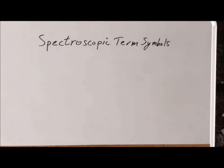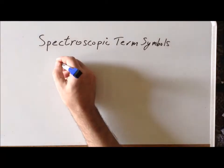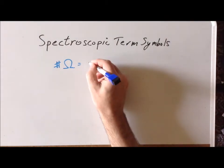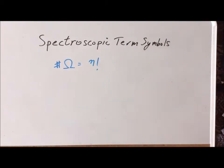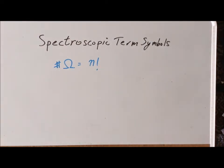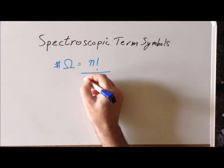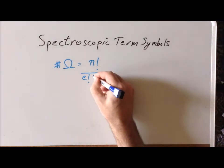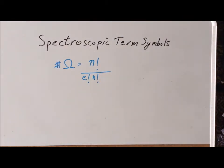The first step in deriving the spectroscopic term symbols for a particular electronic configuration is to determine the total number of microstates. We use the symbol omega for the number of microstates. It's equal to n factorial, where n is the total number of possible electrons that we can fit into a series of orbitals, divided by e factorial, where e is the total number of electrons, times h factorial, and h is the number of holes.